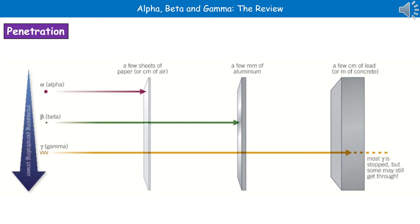This is important to remember, because a favourite exam question is to give you a table of results from a Geiger-Müller tube and ask you to identify what radiations are present in the samples. What you're doing is looking at where the counts drop off to identify whether it's alpha, beta or gamma.